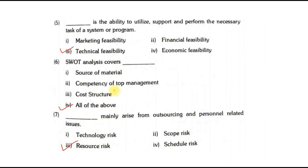The ability to utilize, support, and perform the necessary tasks covering a system or a program is called technical feasibility. SWOT analysis covers source of material, competency of top management, cost structure — the answer is all of the above. The next one mainly arises from outsourcing and personal-related issues — that is a resource risk.